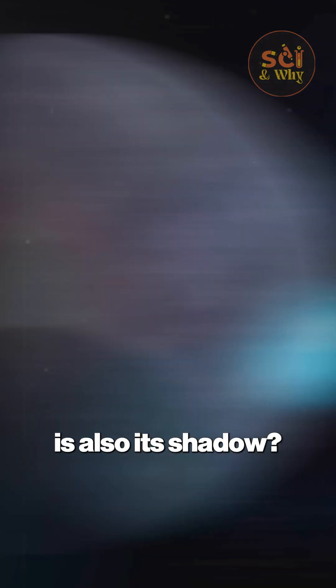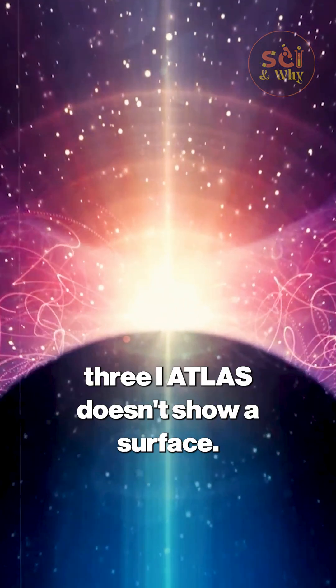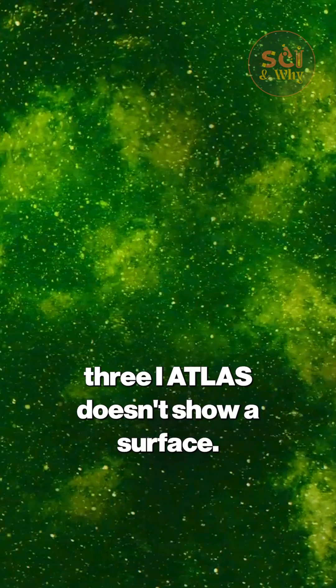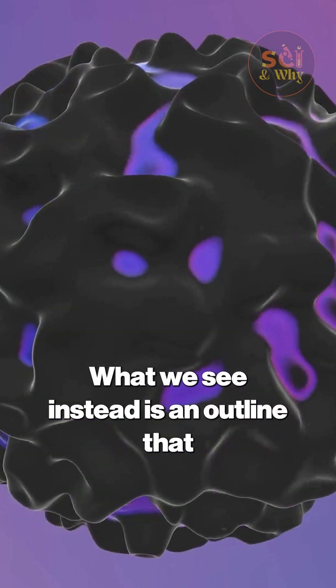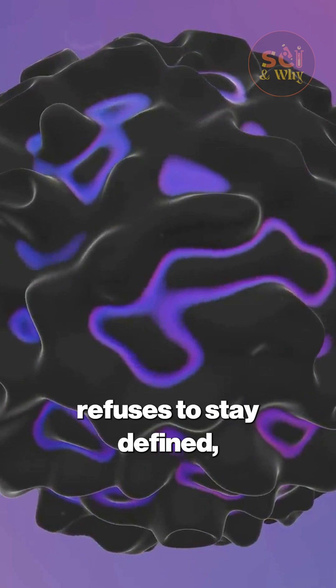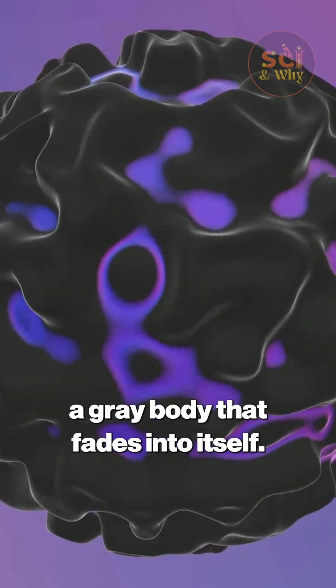What do you do when an object's shape is also its shadow? In the image, 3i Atlas doesn't show a surface, there's no crisp edge, no nucleus shining at the center. What we see instead is an outline that refuses to stay defined, a gray body that fades into itself.